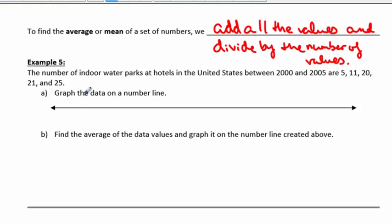Example 5. The number of indoor water parks at hotels in the United States between 2000 and 2005 are 5, 11, 20, 21, 25. We're going to graph each of these on the number line. Now this number line has not been labeled, so we're going to start it off at 0 way over here.